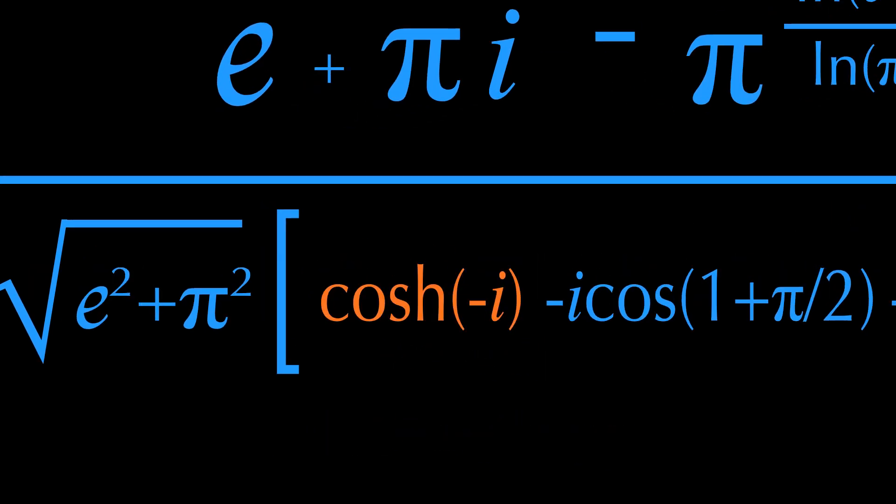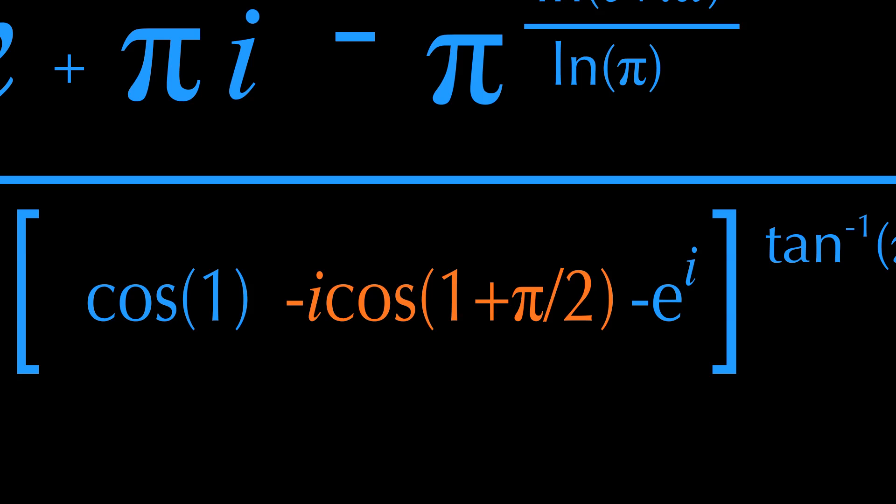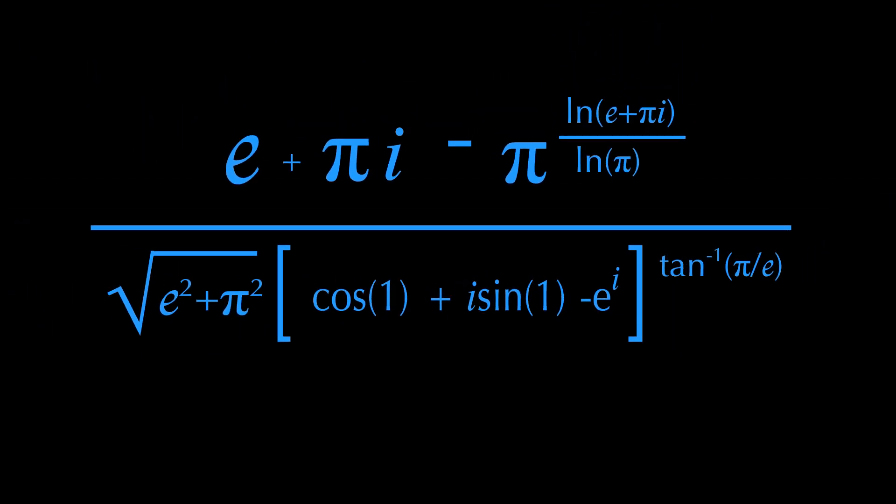Now for this cosh minus i, it is just another trig identity for cos 1. And the same goes for this whole thing. It is just another way to write i sin 1. You can see that this already looks more like our regular complex numbers.